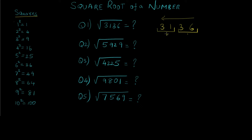For the first pair we need to observe the digit at the units place. This is the digit 6, and we need to observe the digit at the units place in these square values. As you can see, we have 6 in 4 squared and we have 6 in 6 squared. So the units place of the number whose square root we need to find can have 4 or 6 as the answer.